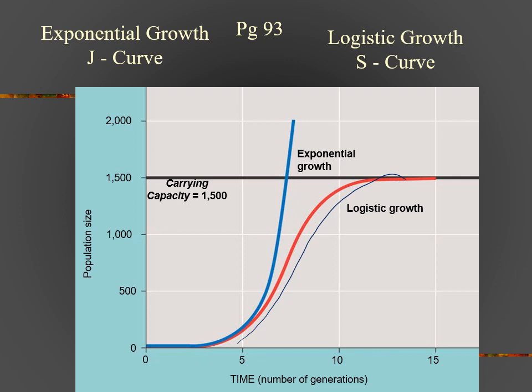You can see why it has this sinuous shape. Exponential growth would predict the population would keep going up and up, but that's not realistic. Eventually the ecosystem is going to reach a limit over how many organisms it can support. It reaches this high end — we call this the carrying capacity — and notice time here is measured in number of generations, not years. You can see the carrying capacity for this population is about 1,500, where the population starts to level off.